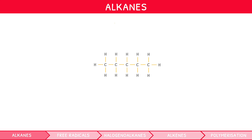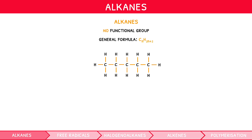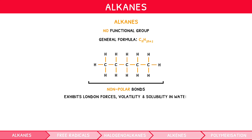We introduced alkanes as the simplest, since their functional group is that they have no functional group — i.e. they consist of only carbon-carbon and carbon-hydrogen single bonds. They are defined by the general formula CnH2n+2. As they are non-polar, their intermolecular forces only exist as weak London forces, and so they are volatile and insoluble in water. The high-strength carbon-carbon and carbon-hydrogen bonds they contain make them relatively unreactive.